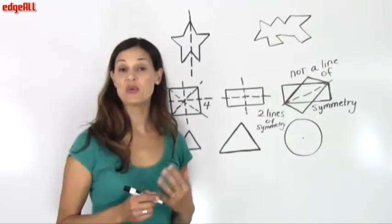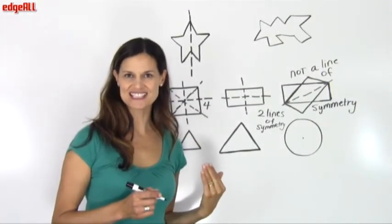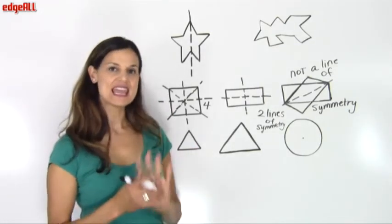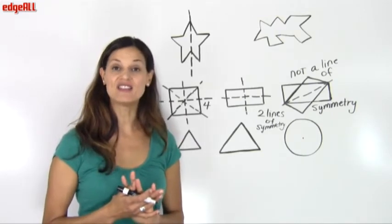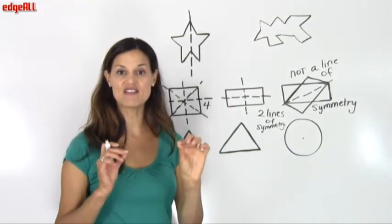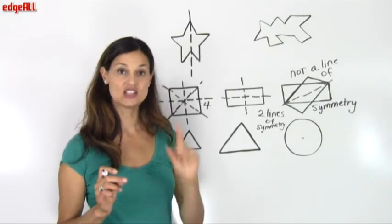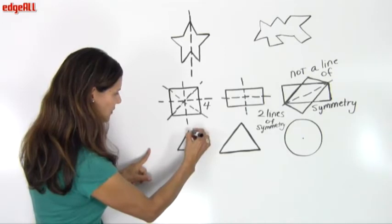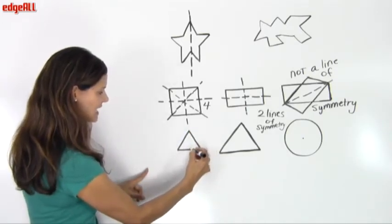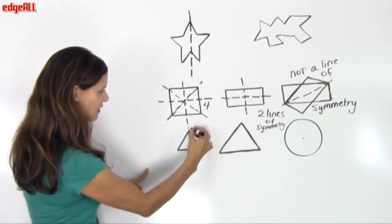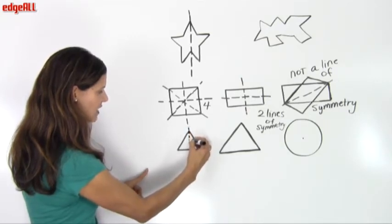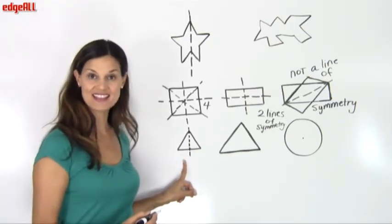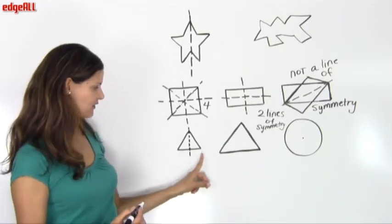Now with equilateral triangles, let's take a look at what lines of symmetry we have. Equilateral triangles have lines of symmetry connecting each of the three angles to the middle of the opposite side. So if I draw a line through this angle here over to the middle of the opposite side, I have a line of symmetry — I can reflect my triangle and the shapes will be the same on each side of the line.